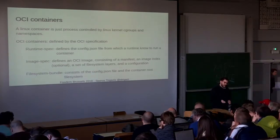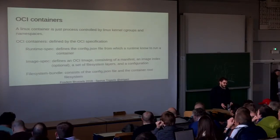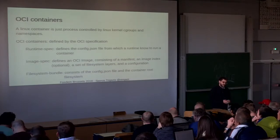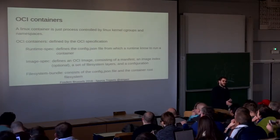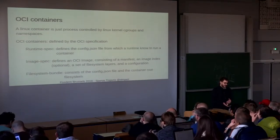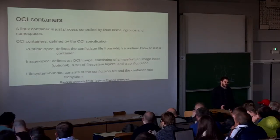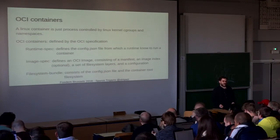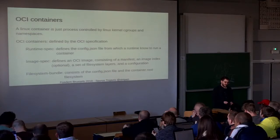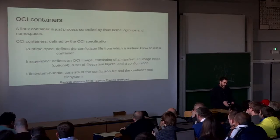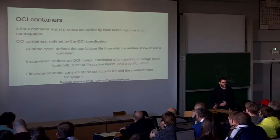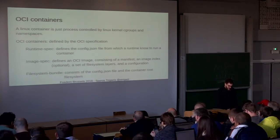Then there is the image spec, which defines how the image should be composed — that the image should have a manifest describing the layers with the image index, and also the set of layers described in the image index, plus the configuration. Finally, there is the filesystem bundle. When the container runtime pulls an OCI-compliant image, it extracts it into a filesystem bundle that has a filesystem where the container will start, and a configuration which points to that filesystem and describes all the capabilities.